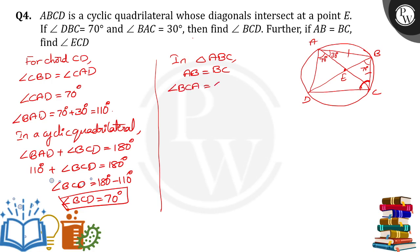So, angle BCA is equal to angle BAC. Both are equal to 30 degrees. So, this angle is equal to 30. BCA is equal to 30 degrees.